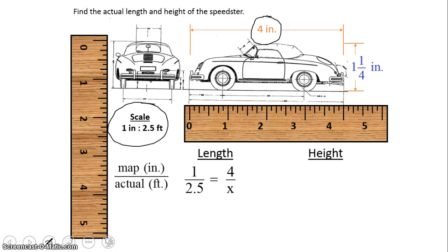Then I'm simply going to cross multiply. 1 times x is x. We've had some really easy numbers here to work with, with the 1 and the x. Then we're going to multiply 2.5 times 4. And if you could try that yourself, pause the video. You will get 10. So my actual length is going to be 10 feet.